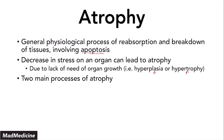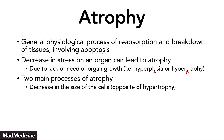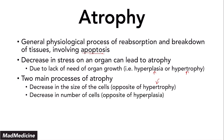There are two main processes of atrophy, just like there are two main processes of cellular growth. The first is a decrease in the size of cells, which is the opposite of hypertrophy. The second is a decrease in the number of cells, which is the opposite of hyperplasia. If you need a review on hypertrophy and hyperplasia, I highly recommend you check out that video.